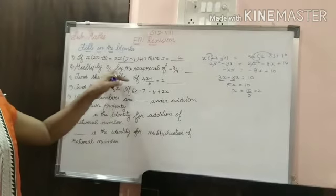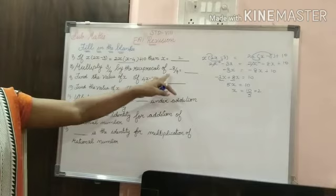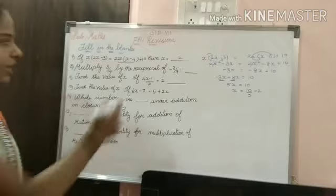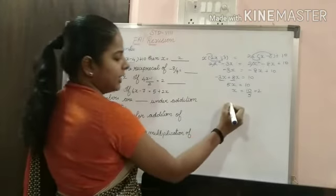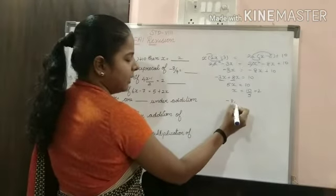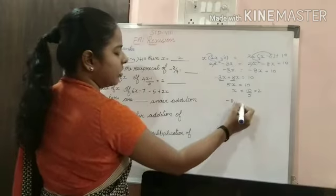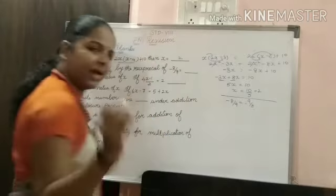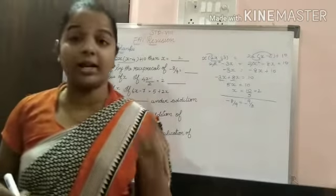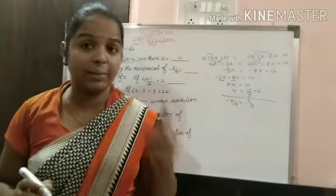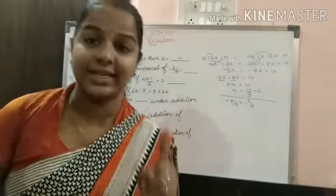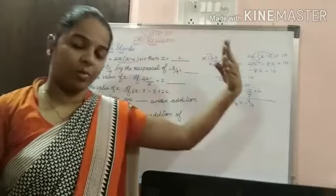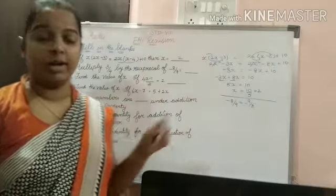Now multiply 3 by 4 by the reciprocal of minus 8 by 9. The reciprocal of minus 8 by 9 is 9 by 8. The sign remains as it is — sign change applies only in additive inverse. In additive inverse the sign changes, but here we are just flipping numerator and denominator for the reciprocal.